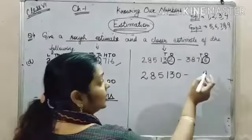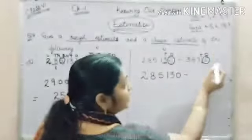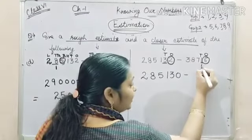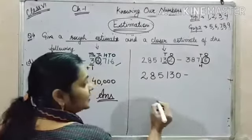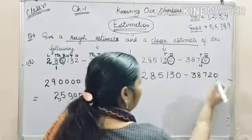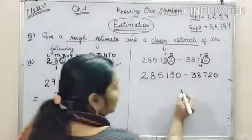And subtracting this number. This is 6, belongs to group 2. That means 1 will be added to 10s place. And number becomes 38,720.